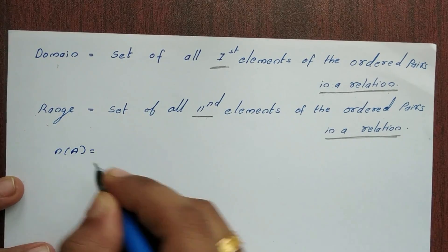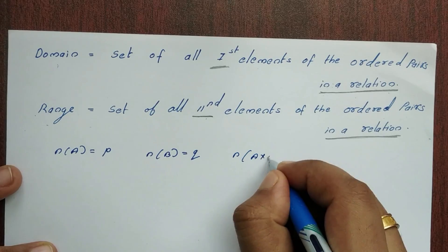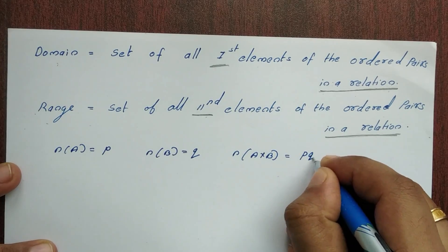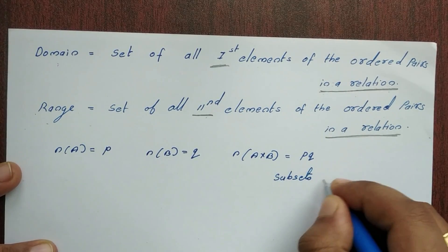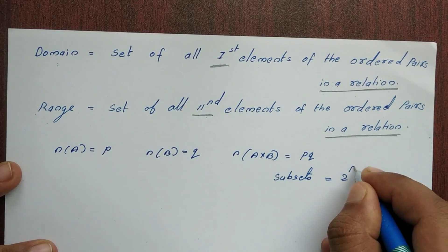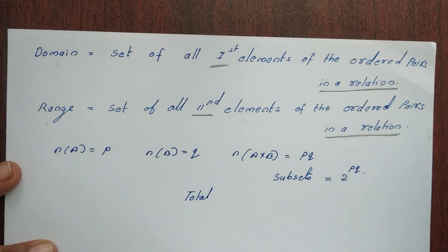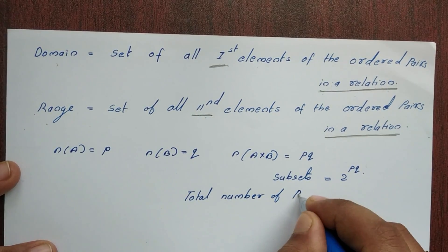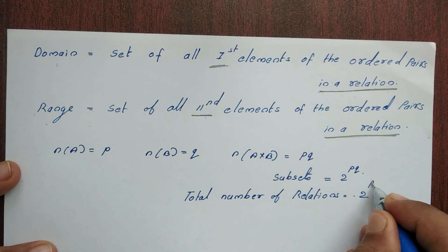If the number of elements in A is P and in B is Q, then the number of elements in A cross B is P×Q. The total number of subsets of A cross B is 2 raised to PQ. So the total number of possible relations is 2 raised to PQ.